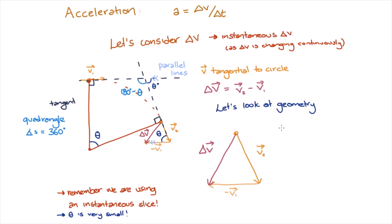Remember, we're considering uniform circular motion, so the speed is constant. This means that the length of v2 is equal to the length of v1, as these are both the magnitude of our velocity vector, and these are both equal to the speed v.